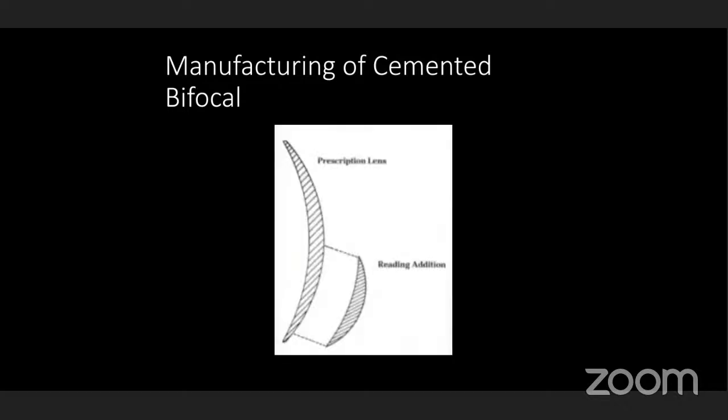Next, manufacturing of cemented bifocal: cementing means combining two different parts with optical cement. We have a distance monofocal lens and a reading button made of a different material or the same material but with a steeper curvature. The upper portion has a different power and the lower button has a power of around plus two diopters. With the help of epoxy resin or Canada balsam — both optical cements — we stick the button onto the lens, giving you a cemented bifocal.